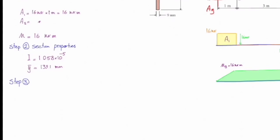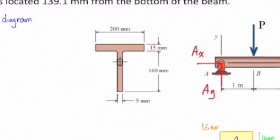We are now ready to determine the maximum bending stress using the equation σ = Mc/I. We have determined the moment M and the moment of inertia I; the remaining parameter is c. Since this section is not symmetric, the distances from the centroid to the top and bottom are not equal. The distance from the centroid to the top is 175 minus 139.1, which equals 35.9 mm, and the distance from the centroid to the bottom is 139.1 mm. The question is which of these two distances should be used as c for calculating maximum bending stress.